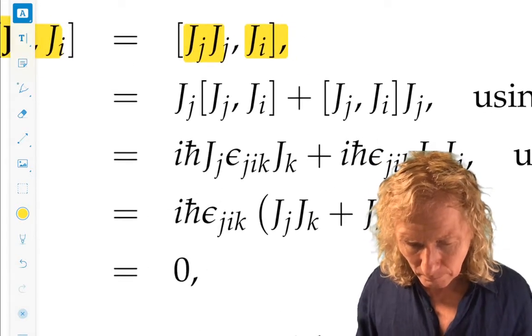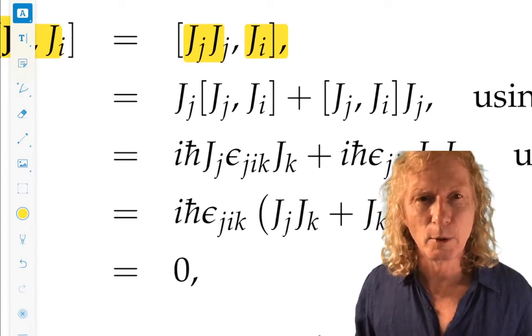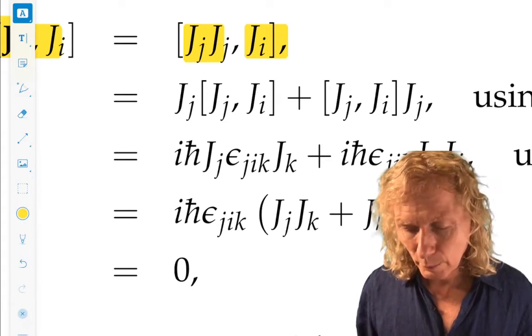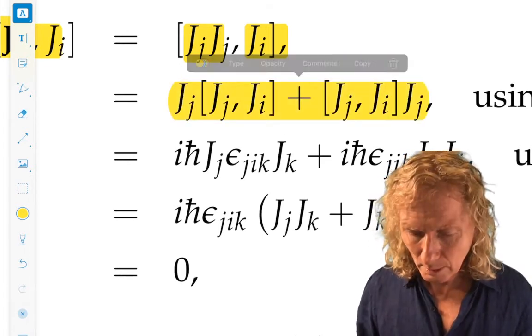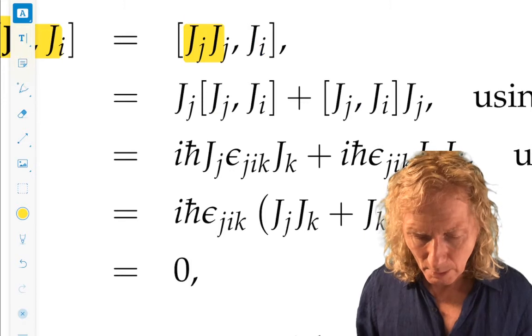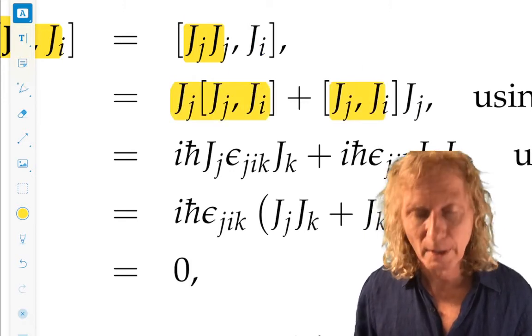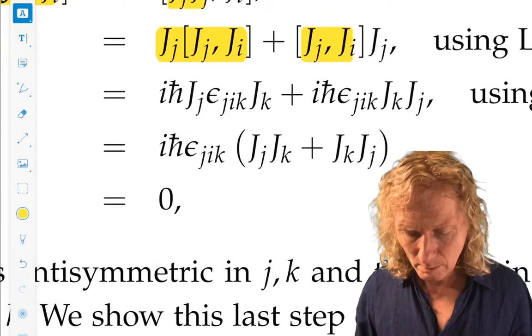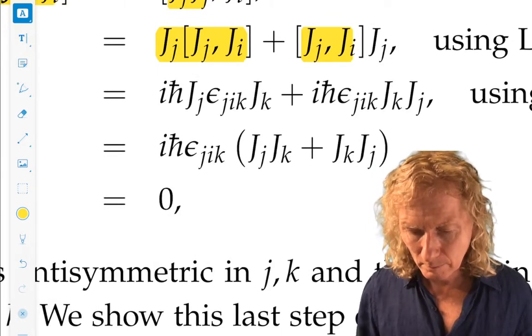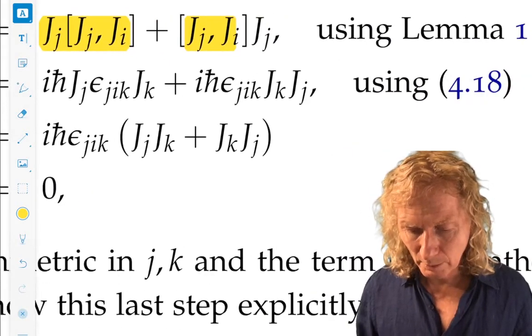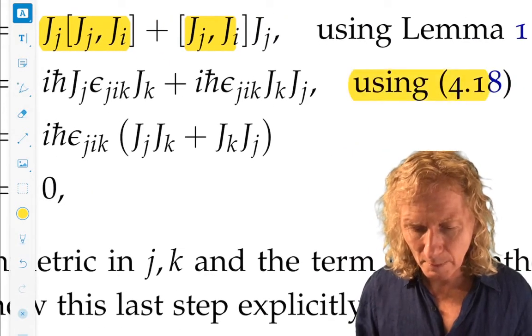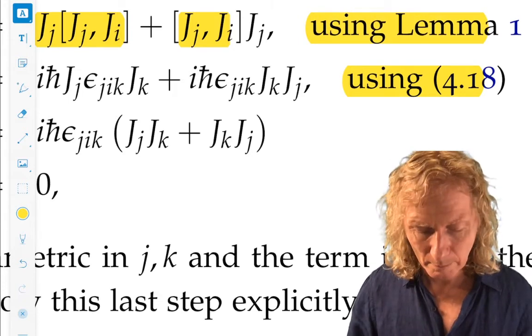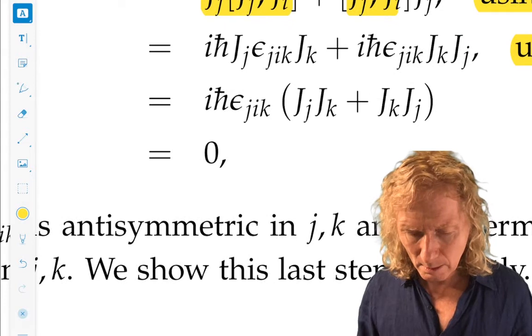Now we use that identity from earlier on that we are dealing with a commutator of a product of operators with an operator, that we use over and over. And for the commutators here, we use the definition, the fact that they satisfy this commutation relation earlier. We write it all out. So this is the commutation relation. This is the result about splitting up the commutator in this way. And what we see is we get a quantity.